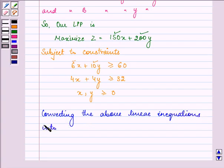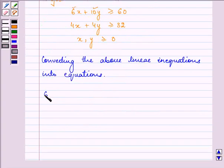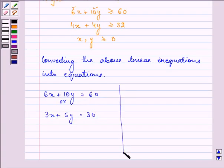In two equations, we have 6X plus 10Y is equal to 60 which can be written as 3X plus 5Y is equal to 30. And further, the second one is 4X plus 4Y is equal to 32 which can be written as X plus Y is equal to 8.